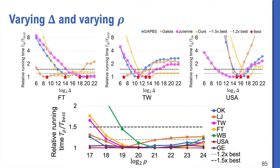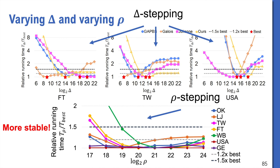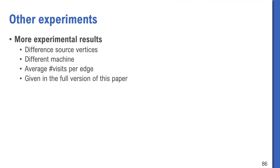Like delta-stepping, we also change the parameter of rho in our implementation. The top figures are for delta-stepping I showed at the beginning of this talk. And the bottom one is for Rho-stepping. We can see the relative running time is more stable when rho changes. We provide more experimental results in the full version of this paper.